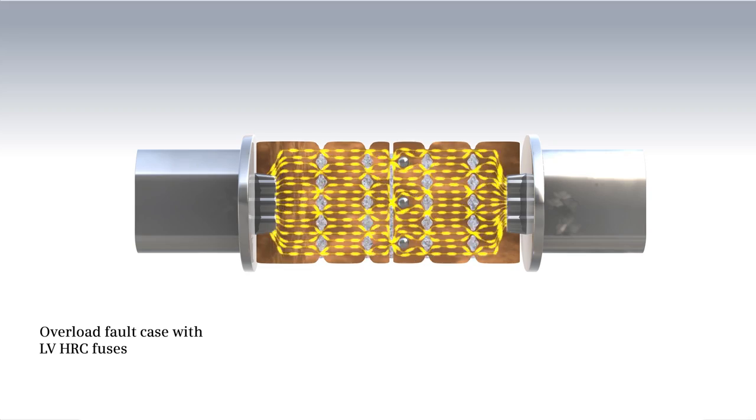In case of overload in the circuit, the current flow heats the fuse element on the narrow points. The Joule heat results in the solders melting.